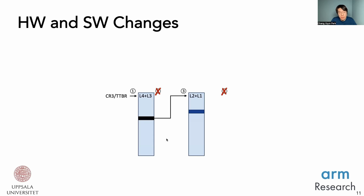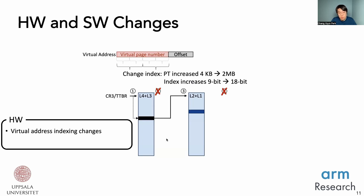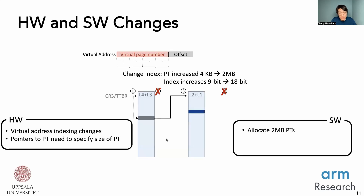On the hardware side, we need the page table walker to be aware of the next page table level and whether it will be a 4KB or 2MB page table node. Based on that, the index needs to change for a 2MB page table node from 9-bit to 18-bit. Pointers to page table nodes also need to specify whether they point to a 2MB or 4KB node, and this information is used by the page table walker to choose the correct index bits. On the software side, we need to allocate 2MB allocations for the page tables and mark pointers with the appropriate size. In total, 700 lines of code were changed for our prototype running on Linux.